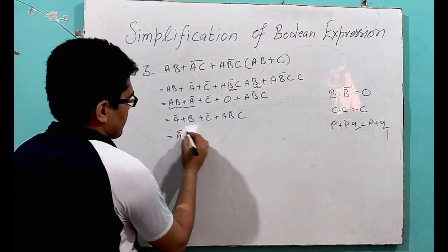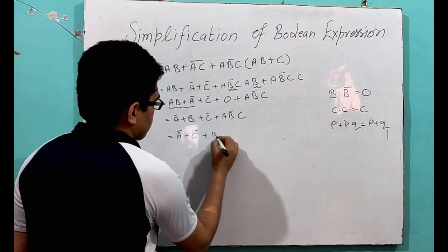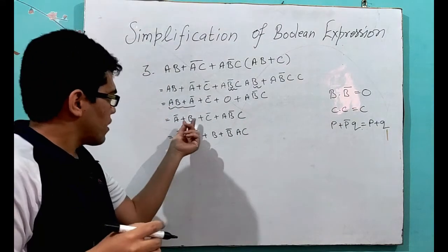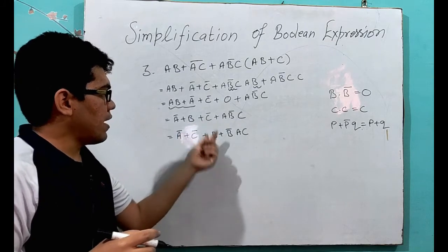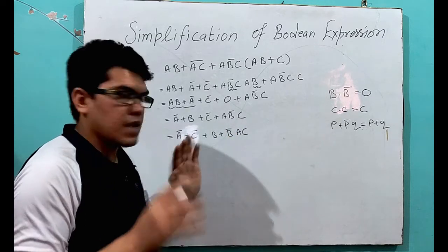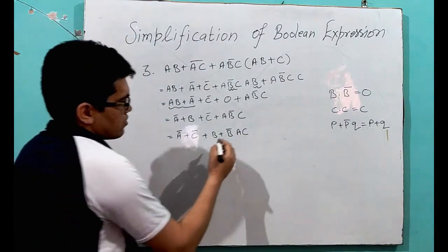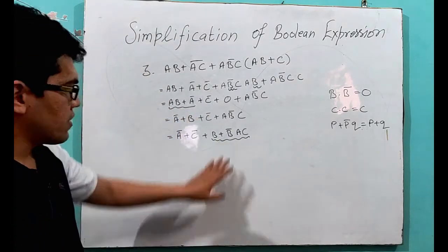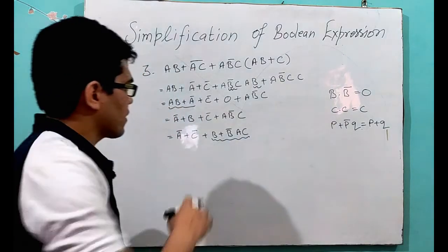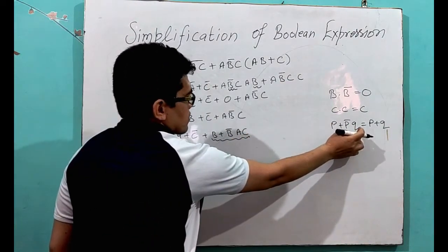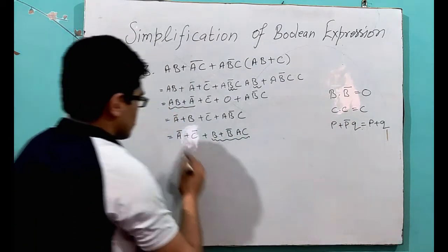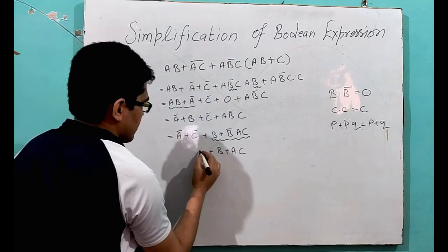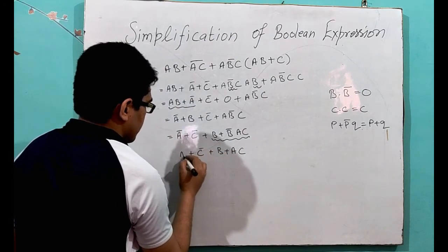Now we will write it as Ā plus C̄ plus B plus B̄AC. What I did here — I just changed the place of B, and this time write B̄AC. The meaning is the same. Now, we can apply the same distributive law again in this expression — the third law of distribution. Here, we can assume AC as Q and B as P, so this can be written B plus AC. The remaining things remain as they are.